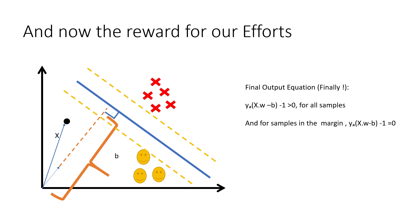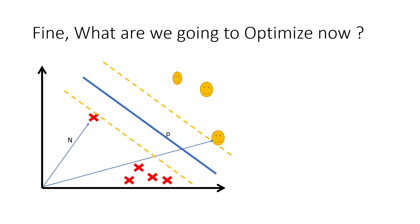That covers how to find the output from the input. Now we need to find what we're optimizing. Since SVM is a maximum margin classifier, it's obvious we have to maximize the margin width — the greater the width, the better the SVM model. So we need to find out what exactly the margin width depends upon.